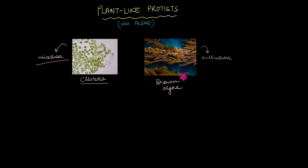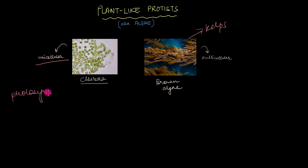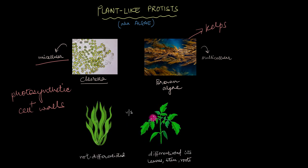Some of the most common seaweeds that you might find are the kelps, which are a type of brown algae. Now, algae are plant-like and not actual plants, so they only share a handful of characteristics with plants. For example, they are mostly photosynthetic and they have cell walls. But neither of them have the true body of a plant — the bodies of algae are not differentiated into leaves, stems, or roots like you would generally see in a normal plant.